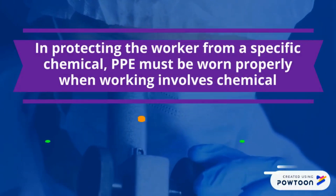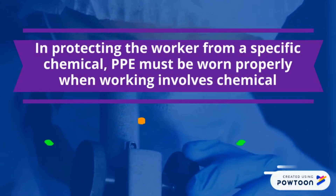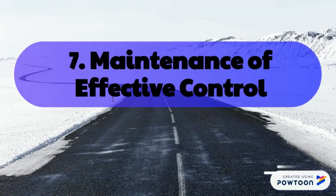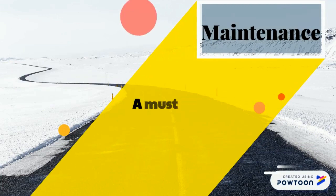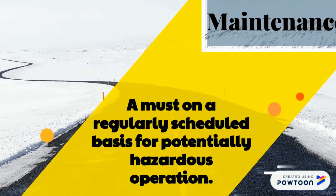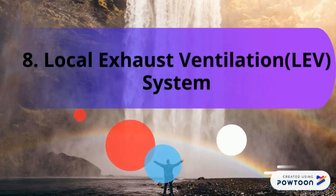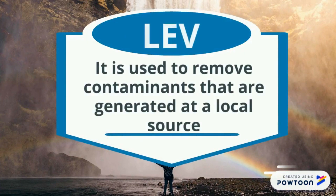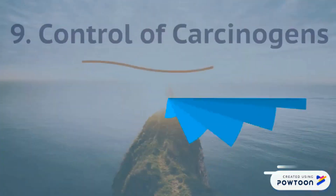Control measure 7: Maintenance of effective control. Maintenance is a must on a regularly scheduled basis for potentially hazardous operations. Control measure 8: Local Exhaust Ventilation (LEV) system. LEV is used to remove contaminants that are generated at a local source.